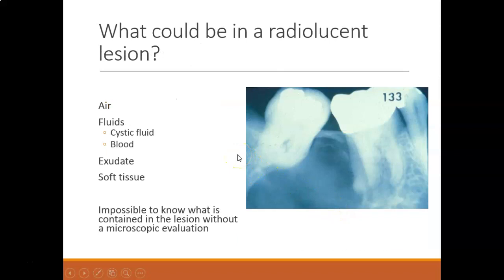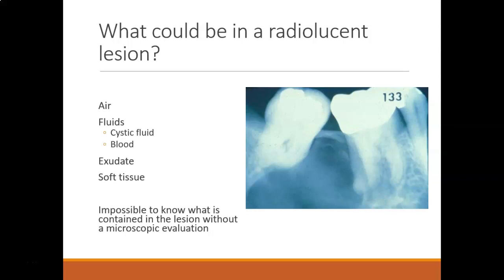What is inside these lesions? It depends on what it is. If it's a cyst, it could be cystic fluid or blood. If it's a periapical abscess, it could be pus. It could also be soft tissue growing inside. It's really impossible to know until the lesion is removed. Sometimes you can tell without a microscope because you'll see pus come out or tissue or blood vessels, but without a biopsy or microscopic evaluation, you wouldn't know entirely what was in the lesion.